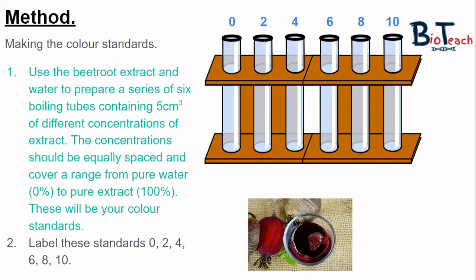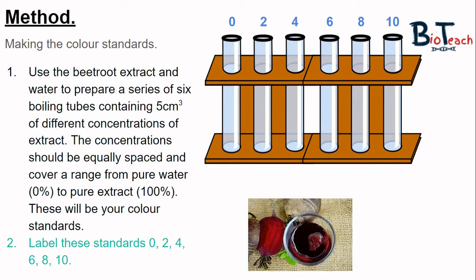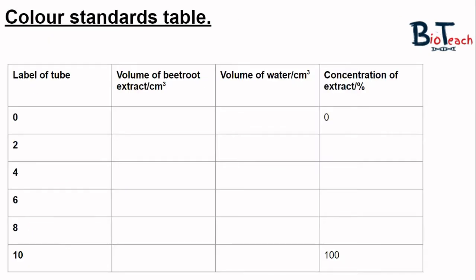First, let's look at how we make the colour standards. Your teacher or technician will have given you a beaker with beetroot extract — essentially pure beetroot juice. We will use this extract and water to prepare a series of six boiling tubes containing five centimetres cubed of different concentrations of extract, each tube labelled 0, 2, 4, 6, 8, and 10. You can see on the left-hand side the label on the tube going from 0 to 10, with columns specifying the volume of beetroot extract and the volume of water in centimetres cubed, and on the right-hand side the concentration of the extract.